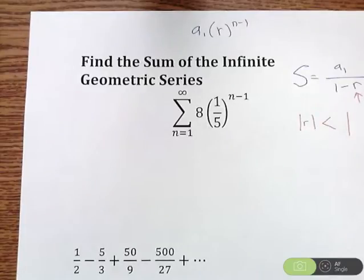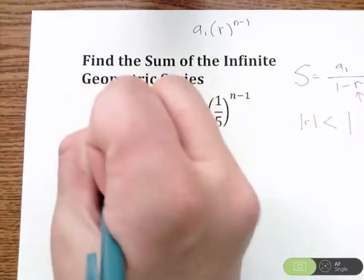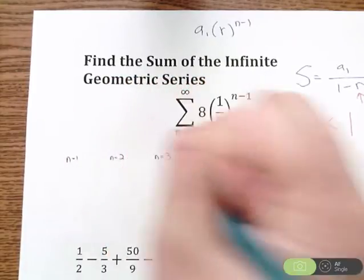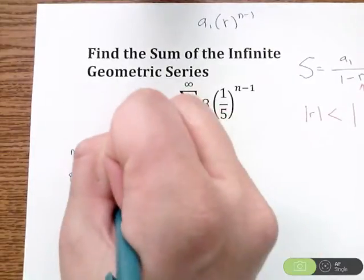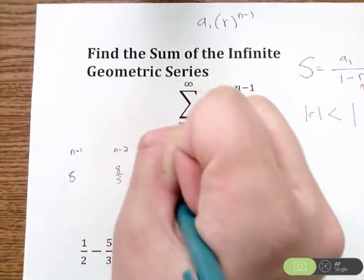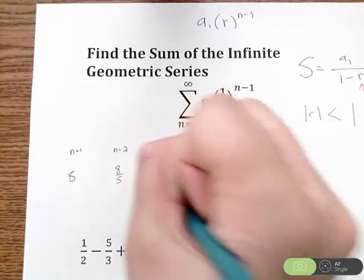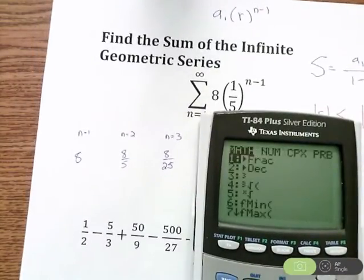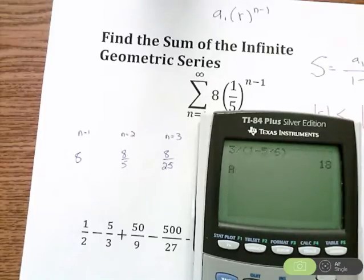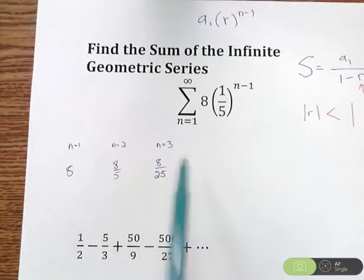Another way you can do that is figuring out what is n=1, what is n=2, what is n=3. Find the first few terms and see if this is actually a geometric series. You're going to find you get 8, 8/5, and 8/25. What you can do to find those numbers is anytime you have a decimal in your calculator, you want to hit math, fraction, and it'll change any number to a fraction.